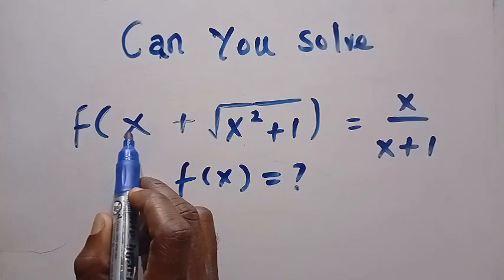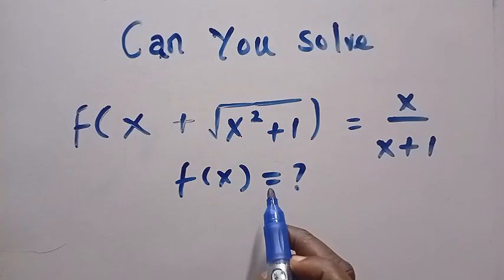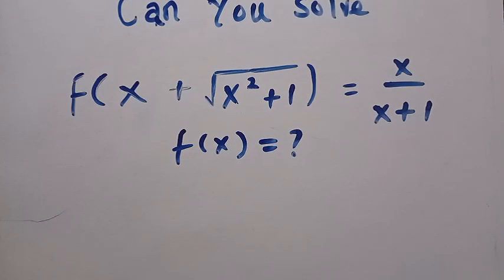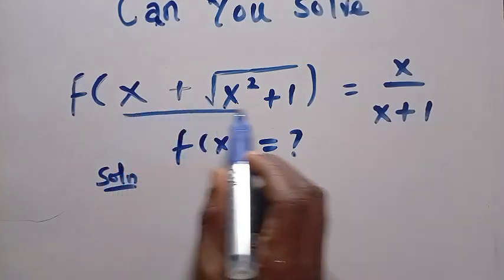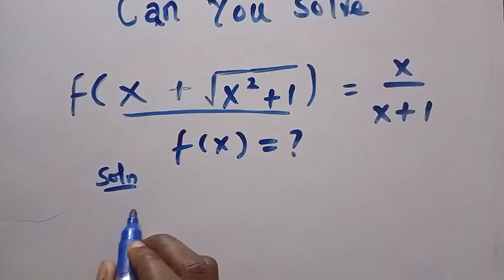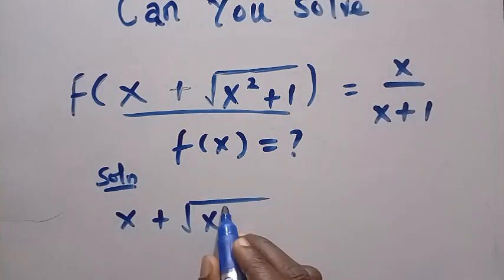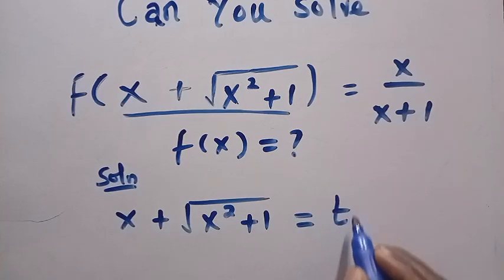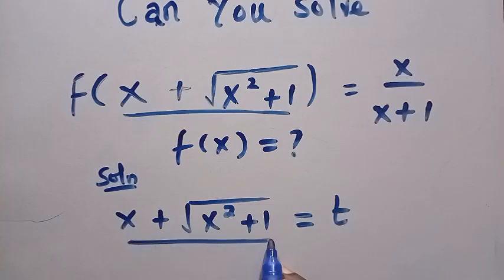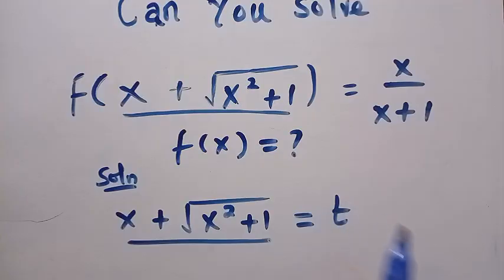If we have this domain as x plus square root of x squared plus 1, to solve this, if I let x plus square root of x squared plus 1 — if I let it to be another letter — so we have square root of x squared plus 1. Suppose I let this one to be equals t. So I have replaced this to be equals to t.